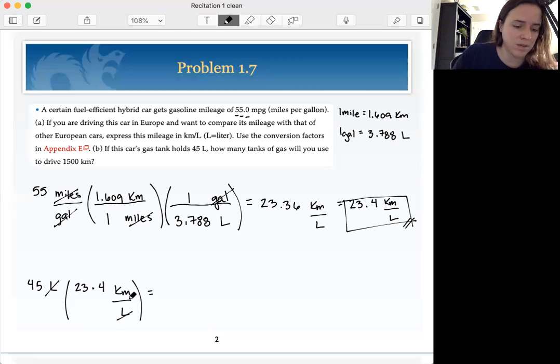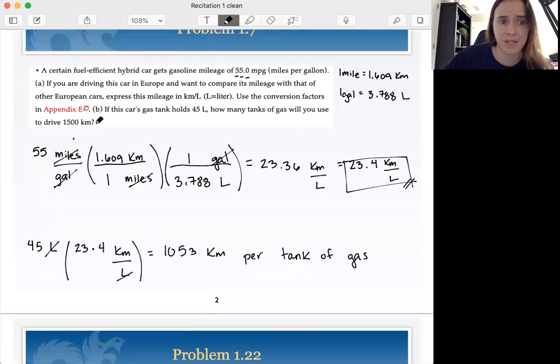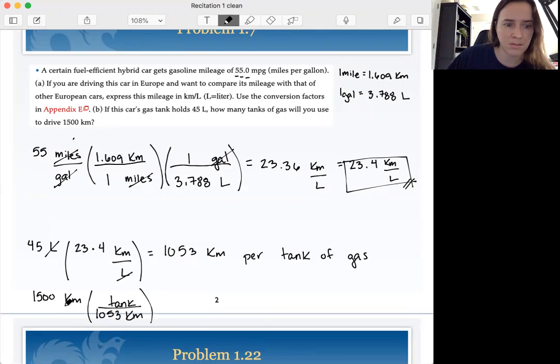So our units cancel out 45 times 23.4. So if we want to know how many tanks of gas it's going to take to drive 1500 kilometers, we can take 1500 kilometers. I know that we get 1053 kilometers